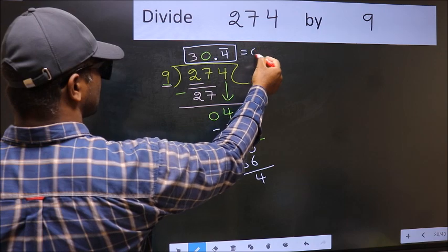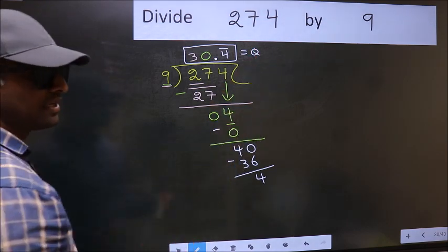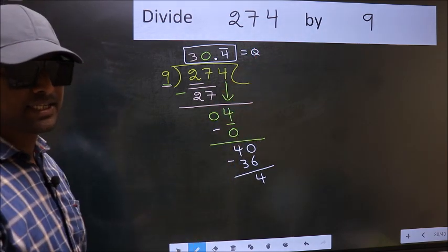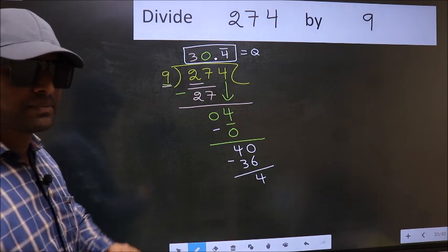So this is our quotient. Did you understand where the mistake happens? You should not do that mistake.